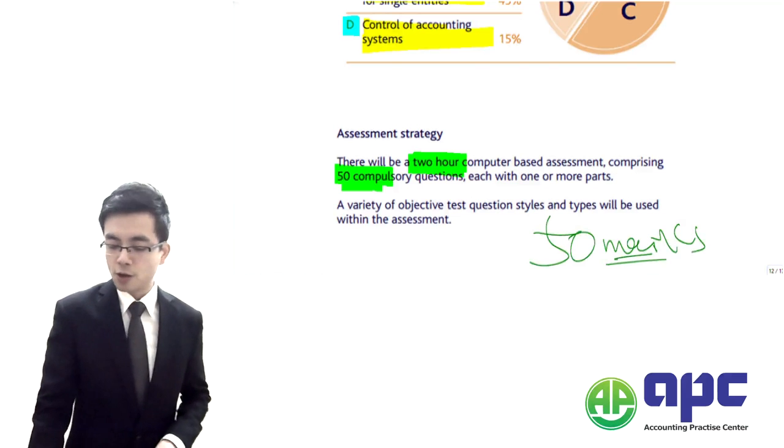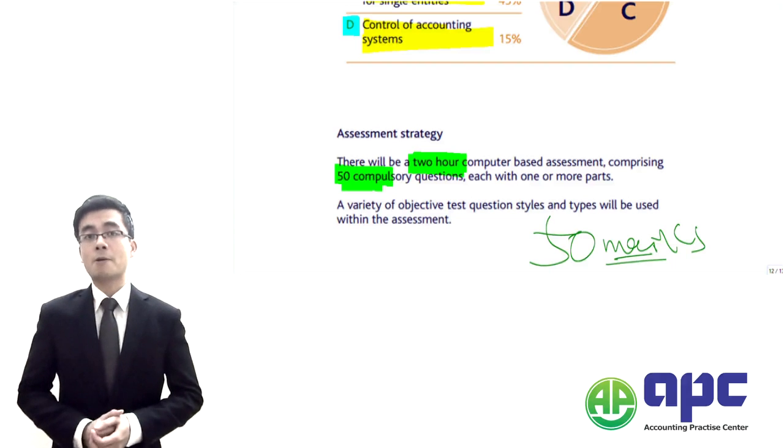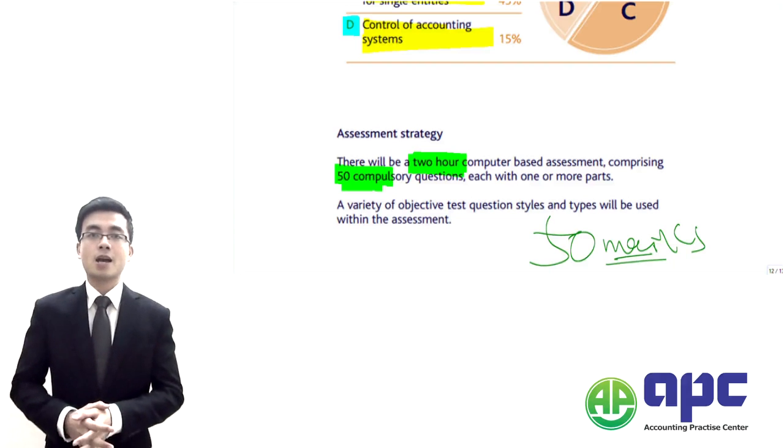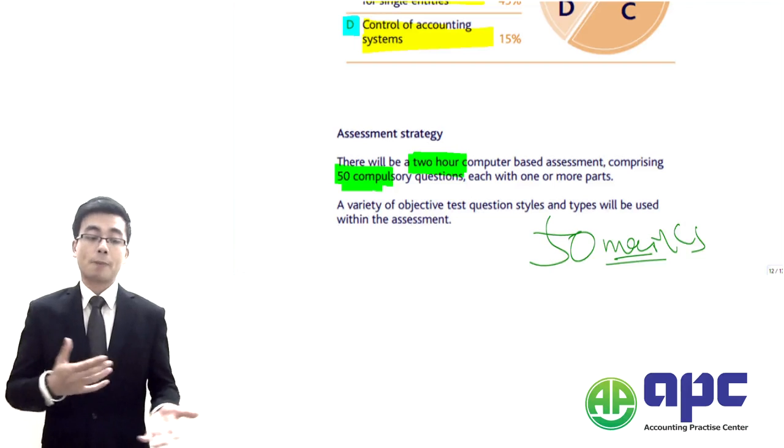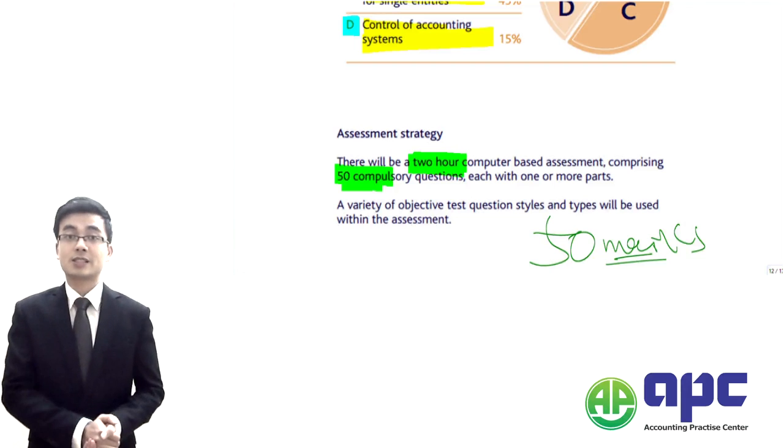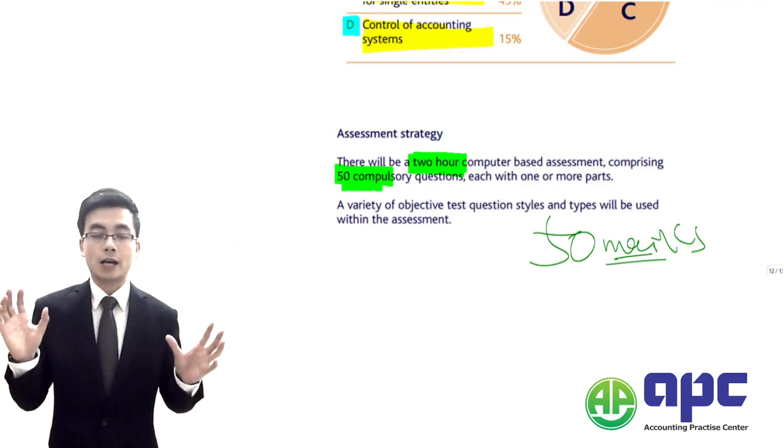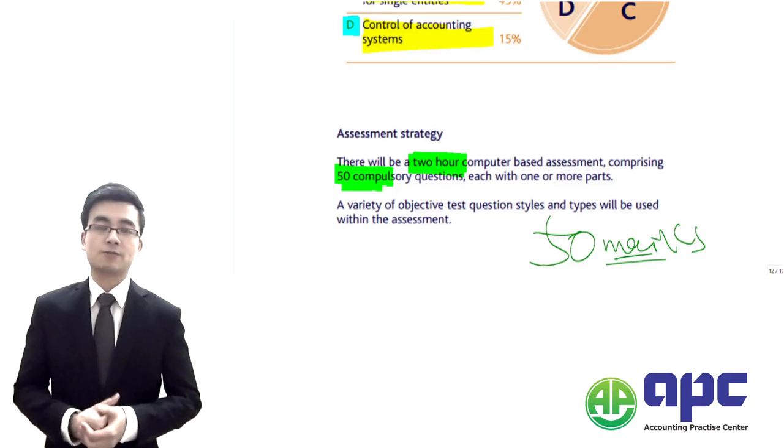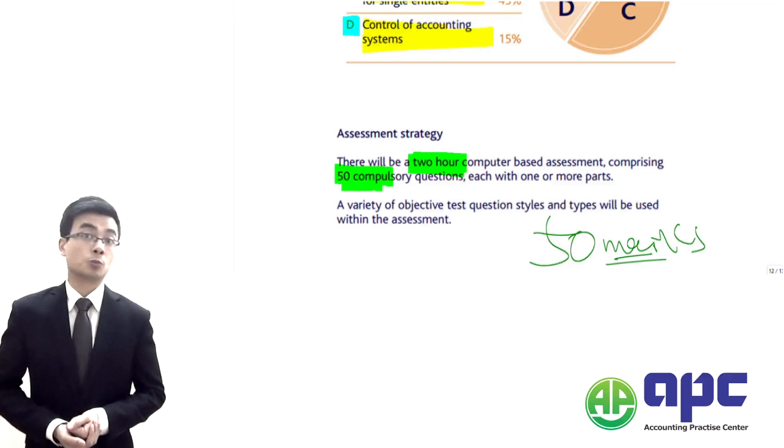Which means that if you only have got 48 marks, of course you will fail the exam. If you've got 52 or maybe 70, of course you can pass this exam. That's what CIMA CO2 is all about. All of these questions are computer-based questions, objective test questions in other words. This includes multiple choice questions.